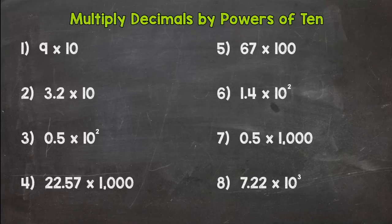As you can see, I have 8 problems on your screen there that we will go through to get this down. So let's go to number 1 here. And number 1, we don't have any decimals. We have 9 times 10. We're just going to review whole numbers real quick and kind of apply what we do with whole numbers to decimals.